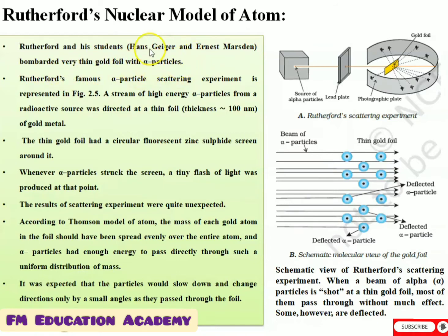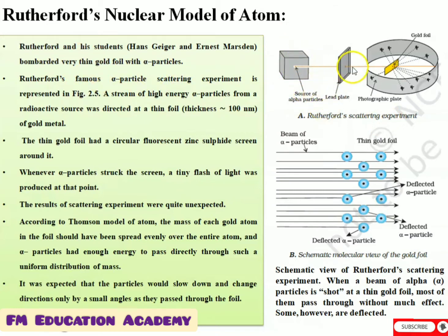Rutherford bombarded a very thin gold foil with the alpha particles he had discovered. You can see here: this is the source of alpha particles, this is our lead plate, and this is the photographic plate in which we have a gold foil. He is bombarding it.